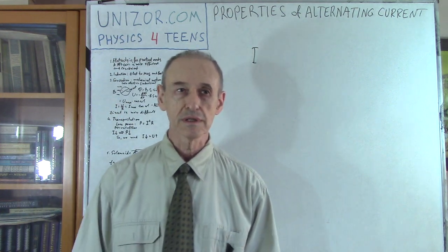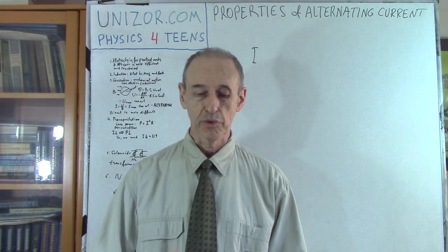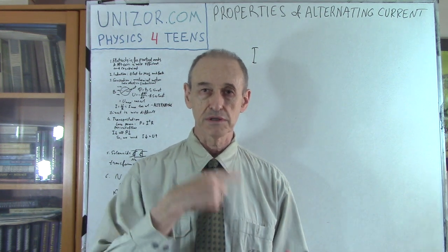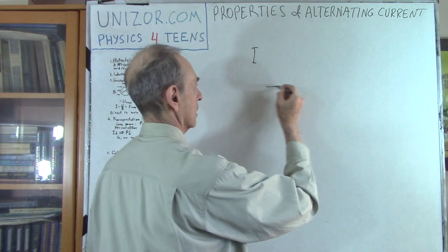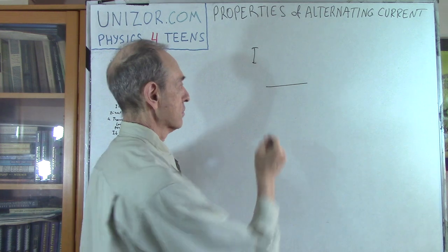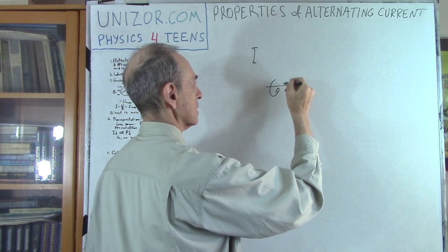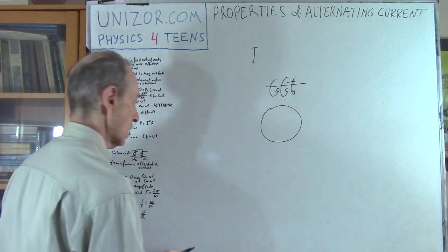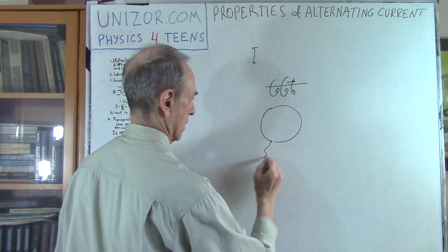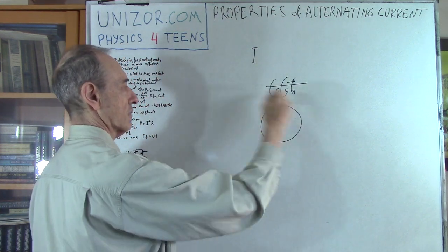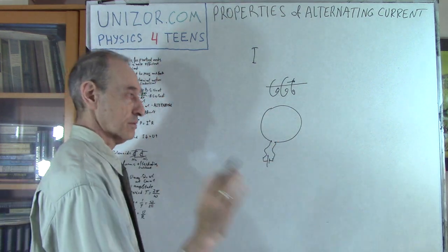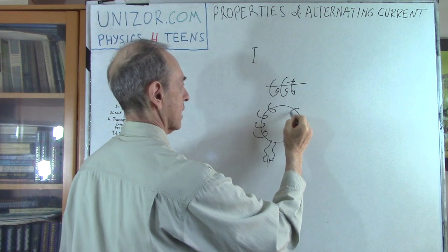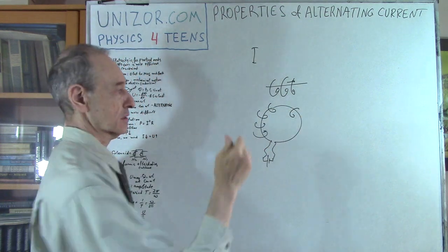First of all, why is alternating current more convenient from a theoretical standpoint? You know that direct current produces a magnetic field around it. So if you have some kind of a conductor — a wire — and there is a direct current in it, then there is a magnetic field around it. Or if you put it in a loop, you have a direct current, a constant flow of electrons, and then you have a magnetic field around it, so it actually acts as a permanent magnet with a north and south pole.